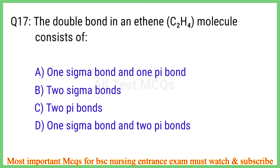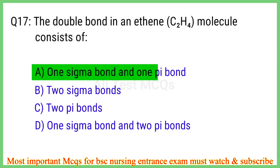Q17. The double bond in ethene (C2H4) molecule consists of? The right answer is option A: One sigma bond and one pi bond.